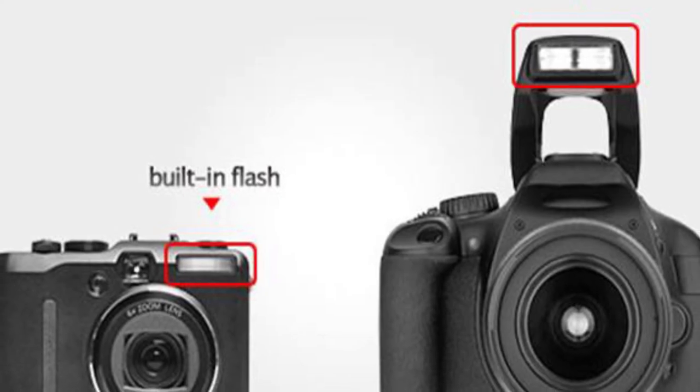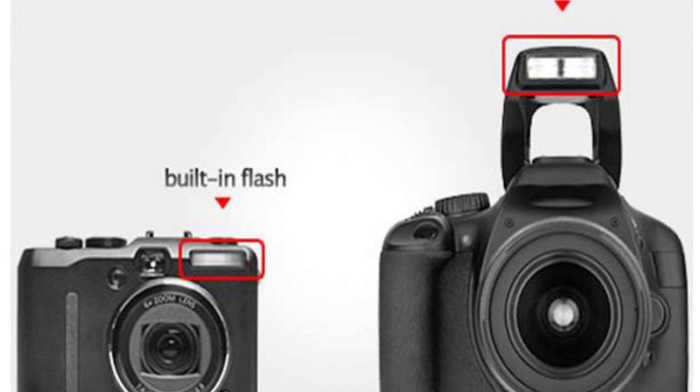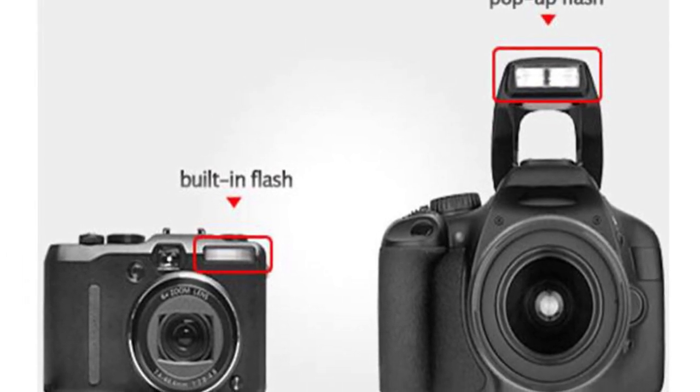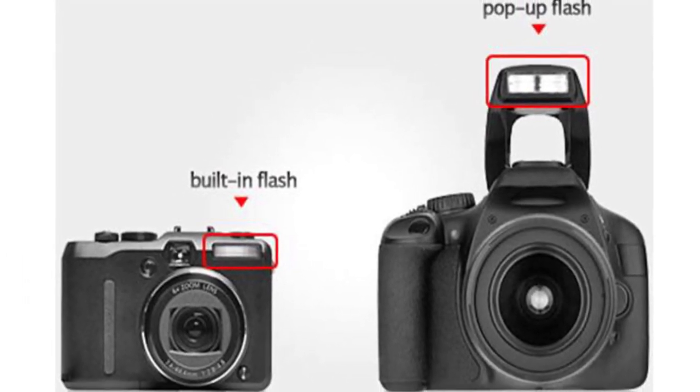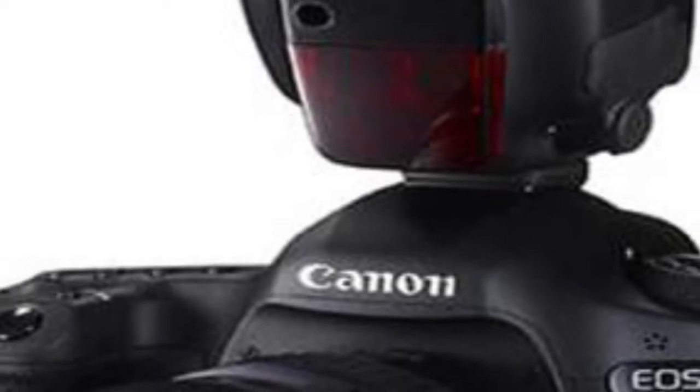On-board flash. The on-board flash is available on most cameras except some professional grade DSLRs. It can sometimes be useful to provide a bit of extra light during dim, low light situations.